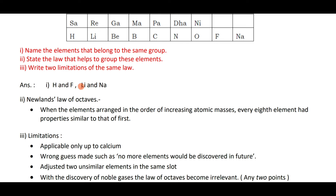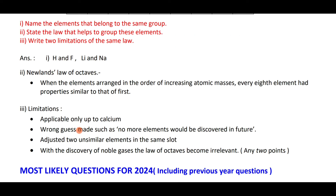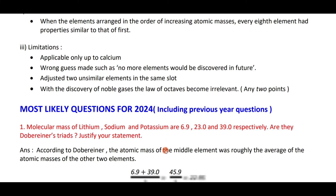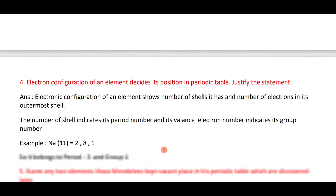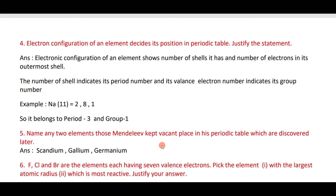Limitations of Newlands' law of octaves: it was applicable only up to calcium; when noble gases were discovered, they had to be placed between existing elements, distorting the octave relationship; dissimilar elements were placed in the same slot. You have to learn Dobereiner's law of triads, Newlands' law of octaves with limitations, Mendeleev's law with limitations, and modern periodic law.